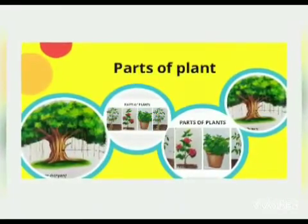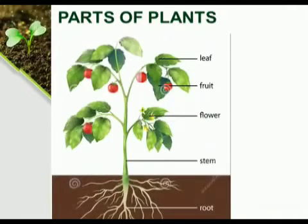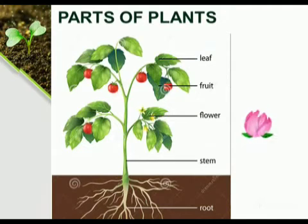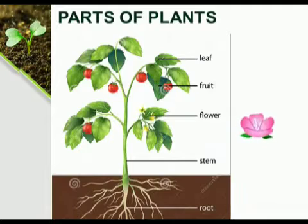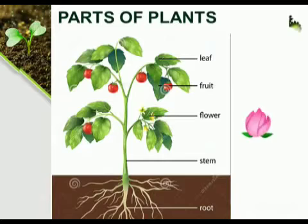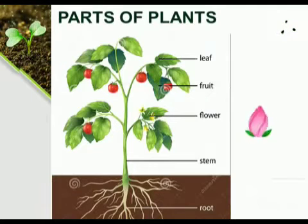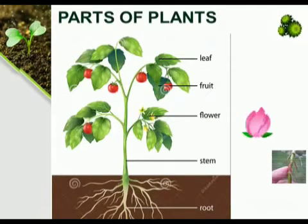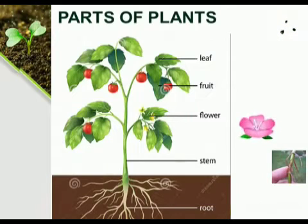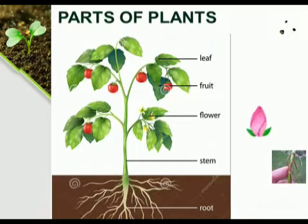Now let's see parts of a plant. A plant has many parts. Let us look at the tomato plant and their uses. Flower — it is the part that produces fruits. Seed — it is the part from which a baby plant grows, and it is present in the fruit. Stem — it is the part that carries water and food to all other parts of the plant.